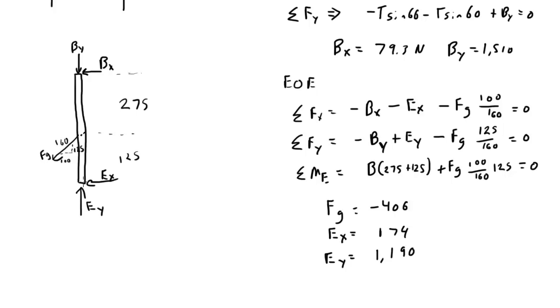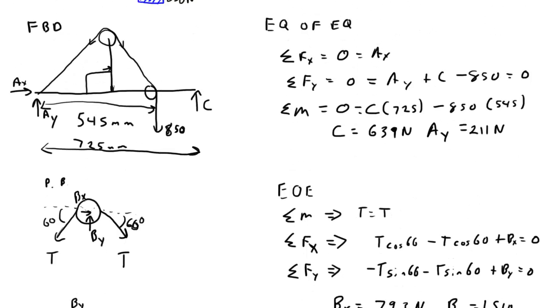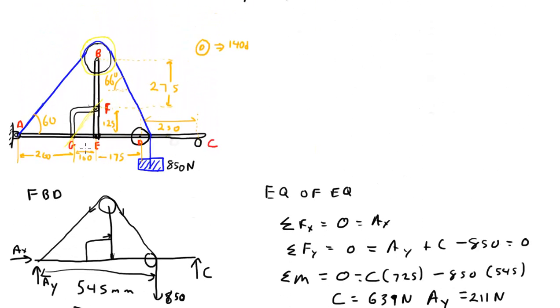So what members do we, or what pins do we not know anything about yet? Well, we don't know anything about the pin at G yet. Well, wrong, because if we look, the same thing that we drew right here for FG. The exact same thing has to be going on here. So since this is a two-force member, once we know what's going on here, we know what's going on down here. The only other thing that's missing is what's going on at this pin D right here.